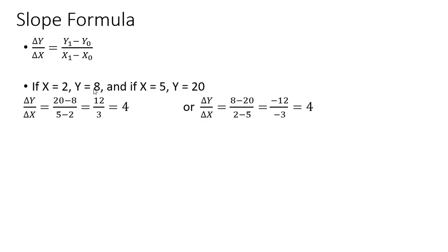As we go from y equals 8 to y equals 20, that is a 12 unit increase. So y-subscript-1 is 20, y-subscript-0 is 8, giving us 20 minus 8 equals 12. In the denominator, x goes from 2 to 5, so x-subscript-1 is 5, x-subscript-0 is 2, giving a difference of 3. So the slope between these points is 4 — if x increases by 1, y would increase by 4.